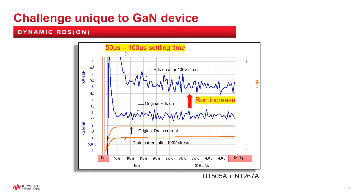Dynamic on-state resistance, RDS-ON, is also important because engineers are still concerned about the current collapse phenomenon of the GaN devices. But the evaluation of dynamic RDS-ON was also challenging. Keysight has already had a dynamic RDS-ON measurement solution in our power device analyzer B1505A, but it can only measure RDS-ON after tens of microseconds from turn-on. The speed was not enough for the GaN devices used in high frequency switching applications, so people are waiting for a better solution.